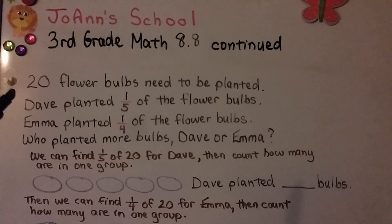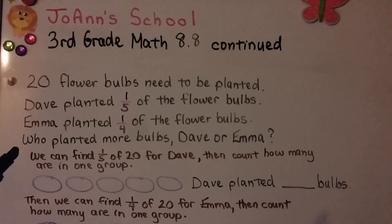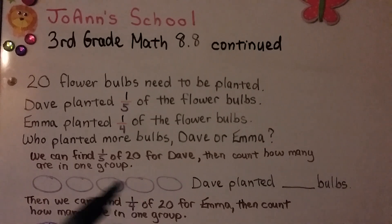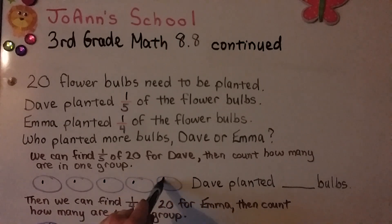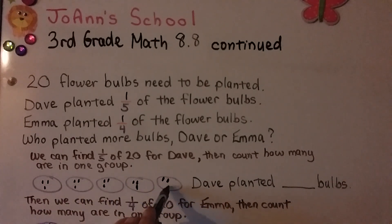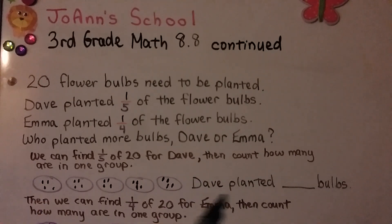Twenty flower bulbs need to be planted. Dave planted one fifth of the flower bulbs, and Emma planted one fourth of the flower bulbs. Who planted more bulbs, Dave or Emma? We can find one fifth of twenty for Dave — it's got a five for a denominator, so we need five groups. We keep putting counters one at a time until we get to twenty: one through twenty. We can see in one group there are four, so Dave planted four bulbs.